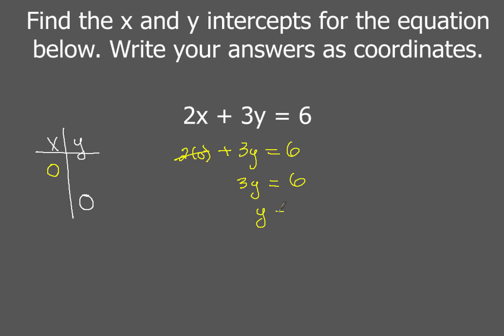Solving that for y of course you get y equals two. Now it says write your answers as coordinates so zero and the answer we got for y is two so that of course will give us the coordinates zero comma two and that is going to be our y intercept.